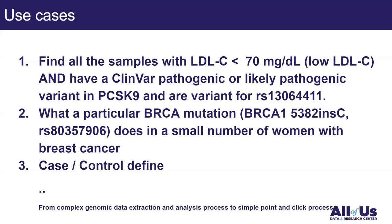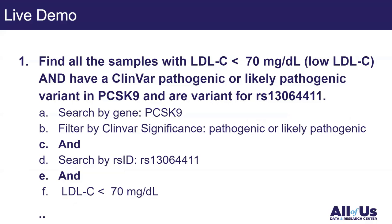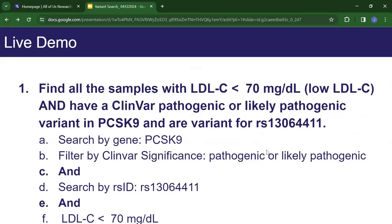These use cases give you a sense of how the new feature will work for your research. I'll use the first case as a live demo: finding all participants with low LDL cholesterol who have a ClinVar pathogenic or likely pathogenic variant in PCSK9 and a variant for a specific RSID SNP. The steps are: search by gene, filter by clinical significance, search by RSID, and filter by LDL cholesterol level.